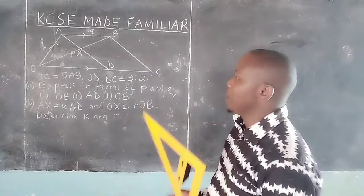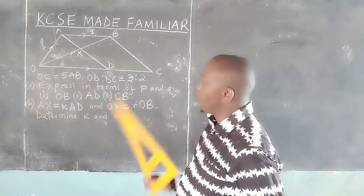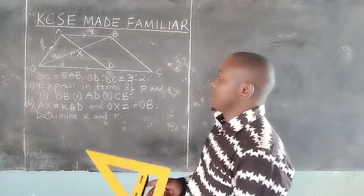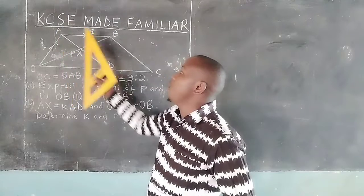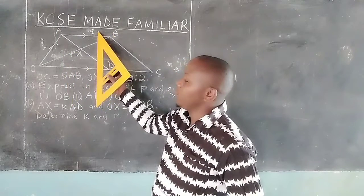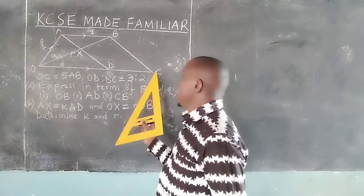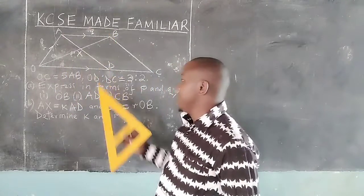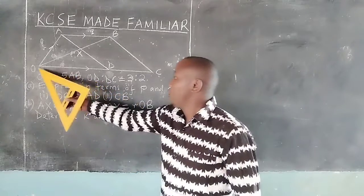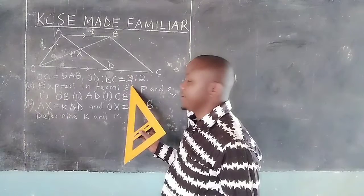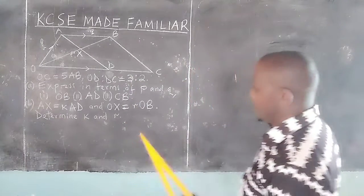We are told the figure below is a trapezium O, A, B, C such that vector OA is P and OB is Q. OC equals 5AB, therefore OC equals 5AB. We are also given that the ratio of OD to DC is 3 to 2, and we are given the following questions expressing the vectors.